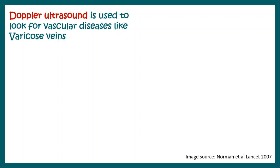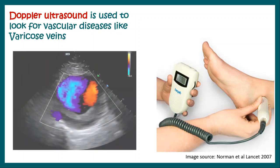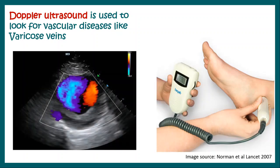Doppler ultrasound is used to look for vascular diseases like varicose veins. It uses the principle of the Doppler effect to image the velocity and direction of flow of blood through the blood vessels.